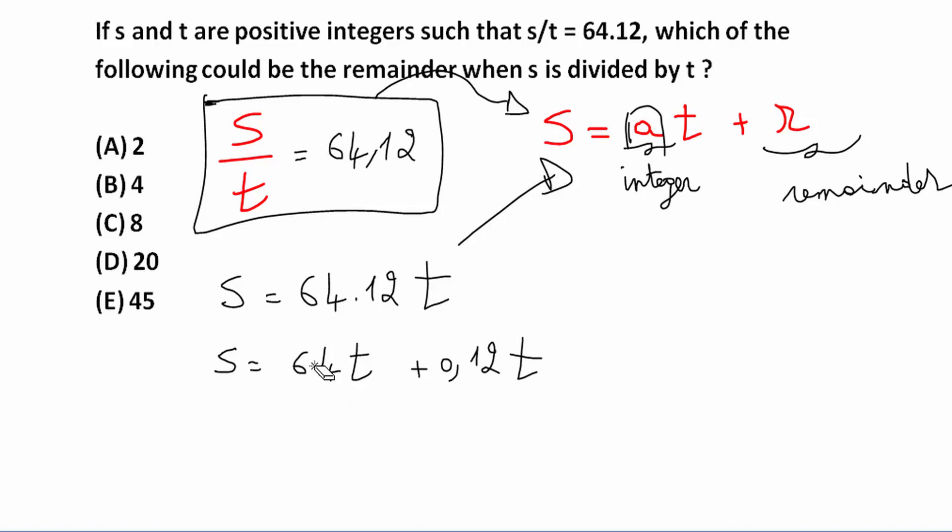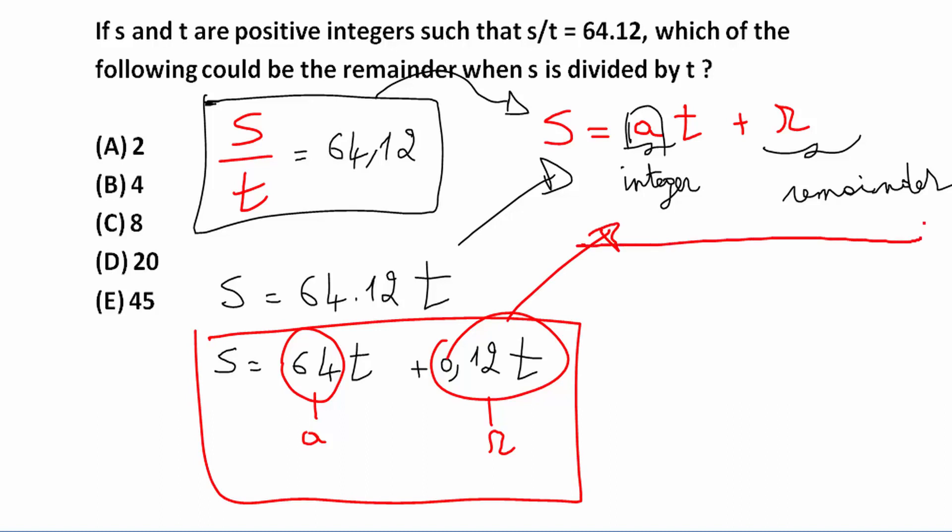So now I have an integer A, and I have that remainder R. So this one is very similar to this one. So now here 64 is an integer, and here is the remainder.